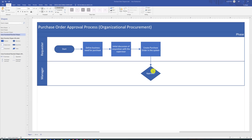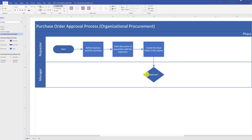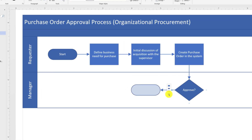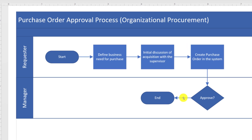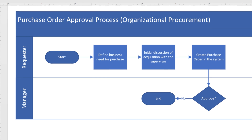Typically, for a decision shape, there is one input and multiple outputs. One output might be when the manager doesn't approve the request — we show it with an N label, and double-click on the line to type the text for that branch. If the manager approves the request, it needs to go to the procurement department for processing. As you can see, we don't have a procurement department Swimlane, but we can add it in multiple ways.